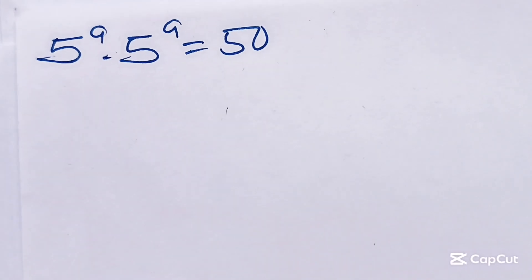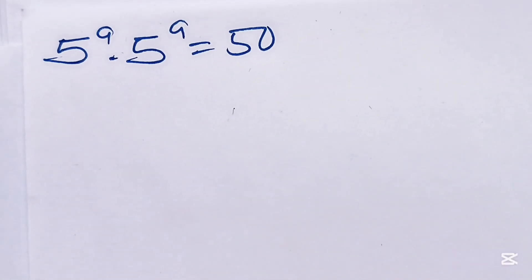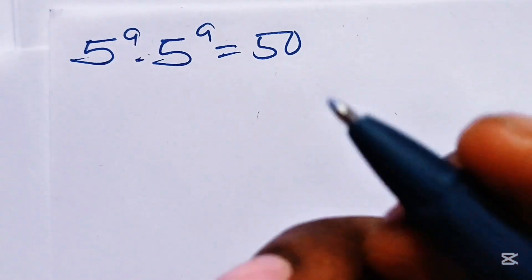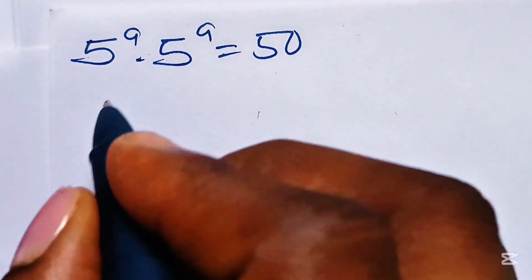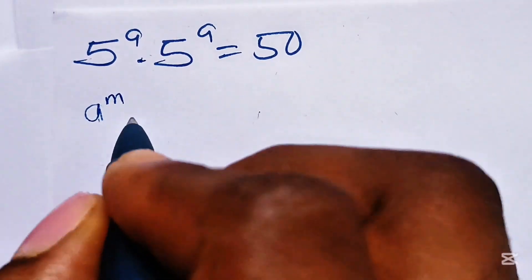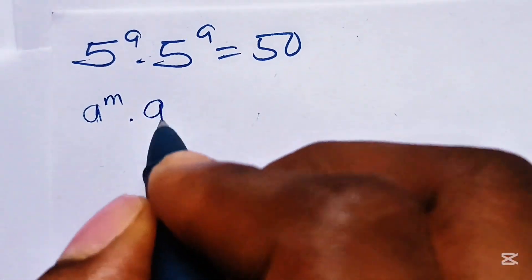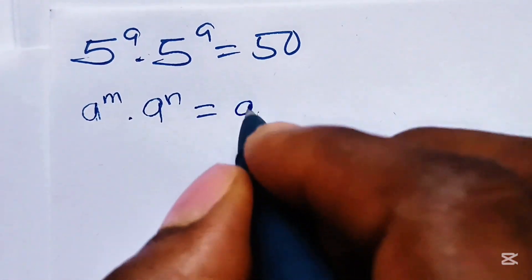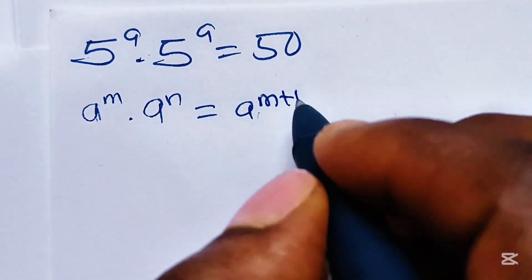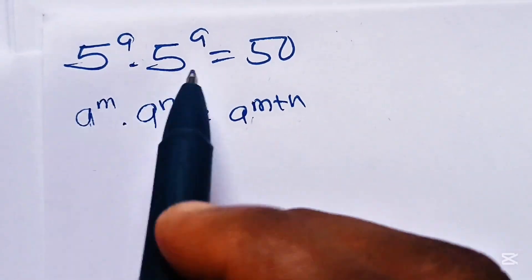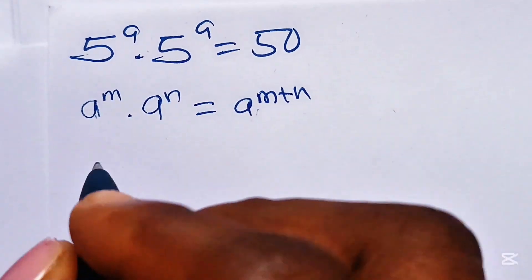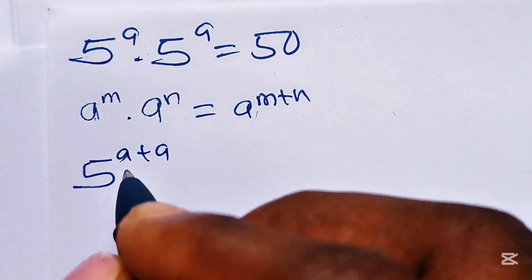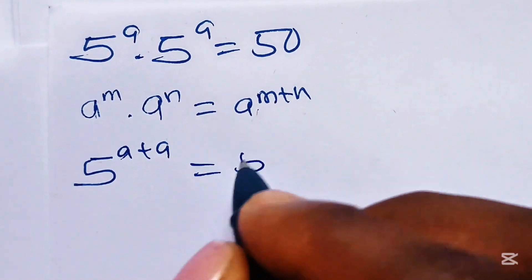Hi everyone, let's solve for a. First we need to note that following the law of exponents or indices, a to the power of m multiplied by a to the power of n is equal to a to the power of m plus n. Here we have the same base which is 5, so we are going to pick one base which is 5 and add the powers.